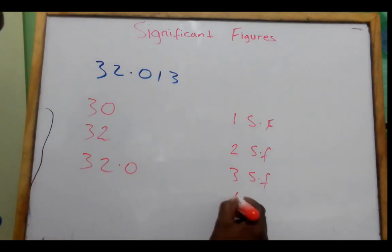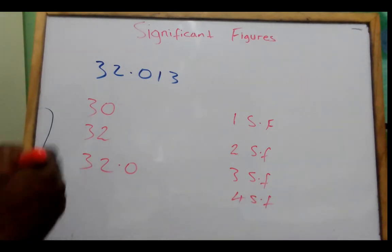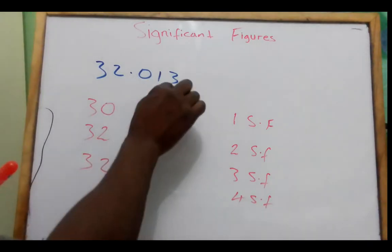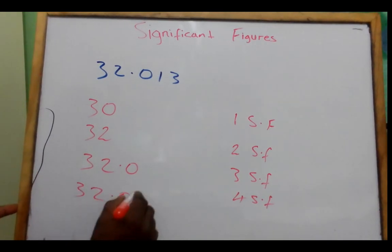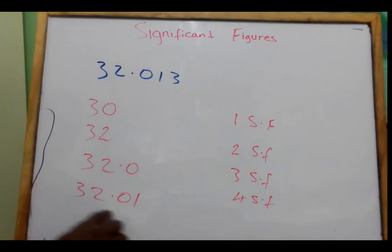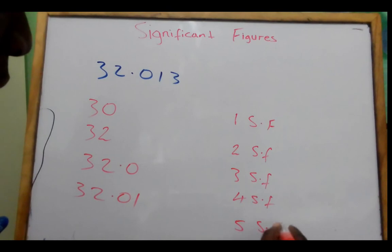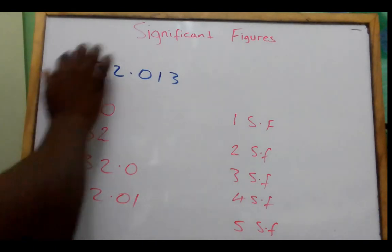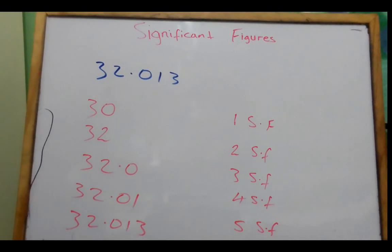We are going to look at this number here because we want 4 significant figures. Since this number is less than 5, we must write 32.01. This is 4 significant figures. For 5 significant figures, that would be all the numbers here, so we have 32.013. This is how we do significant figures.